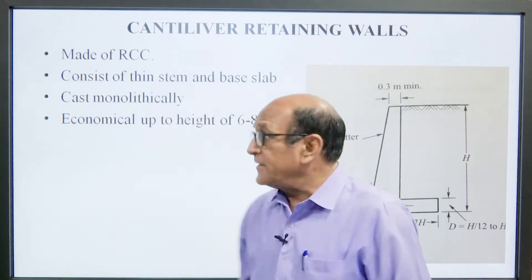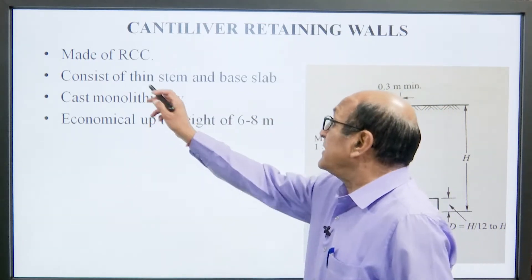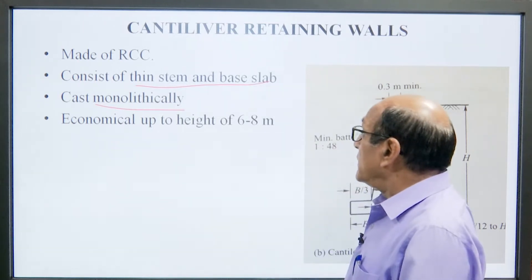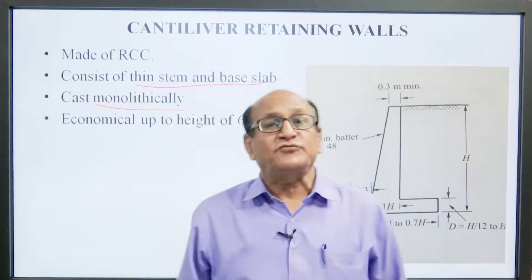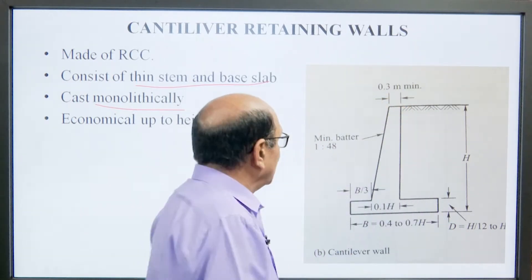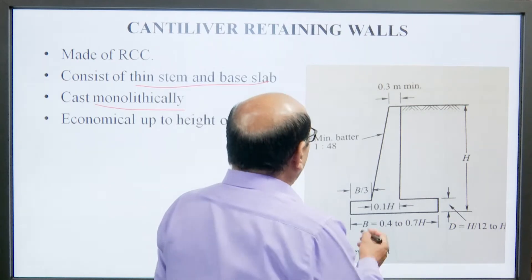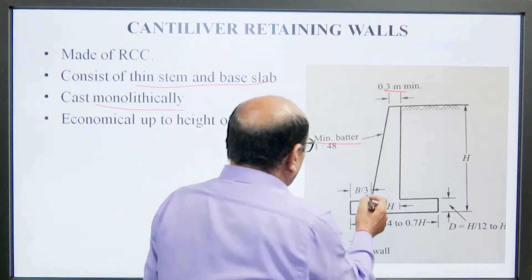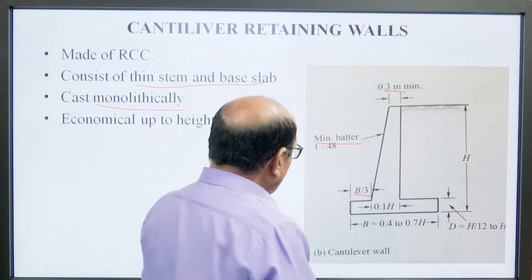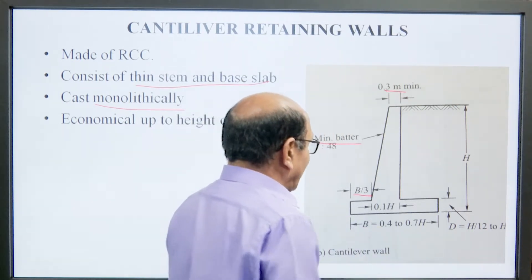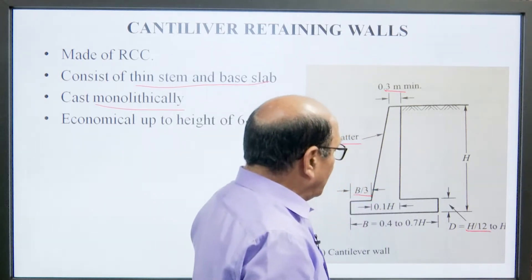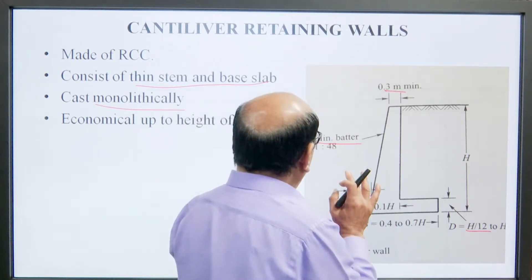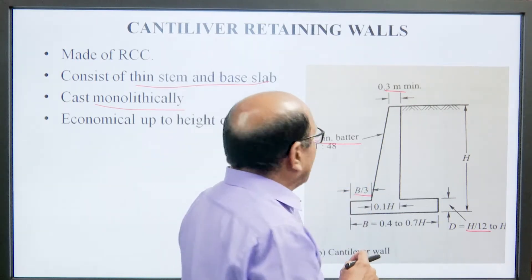Cantilever retaining walls are made of RCC and consist of a thin stem and base slab cast monolithically. They are economical up to a height of 6 to 8 meters. The top width is 0.3 meter, minimum batter is 1 to 48, base width b is 0.4 to 0.7h, and stem thickness d is h/12 to h/8.